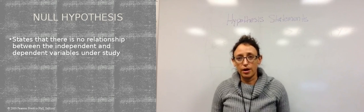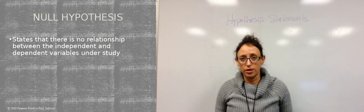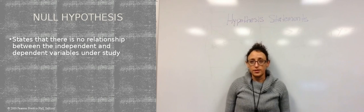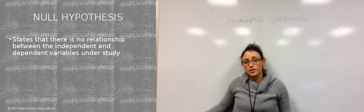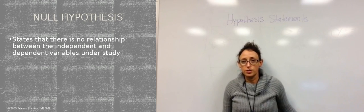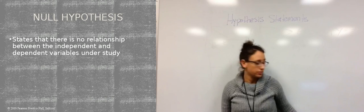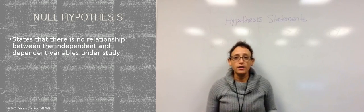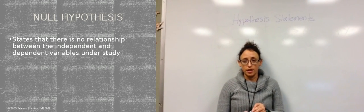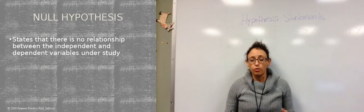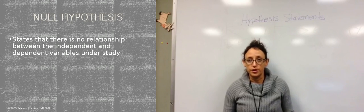We've got three kinds of hypothesis statements that we're going to look at today. The first kind is a null hypothesis statement. A null hypothesis statement basically states that there's no relationship between the independent variable and the dependent variable you're looking at. When you write a null hypothesis statement, you're going to use words like 'equals,' 'no relationship,' or 'no difference.'